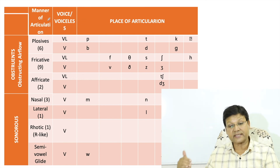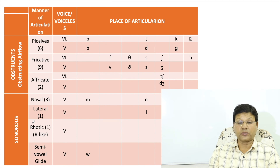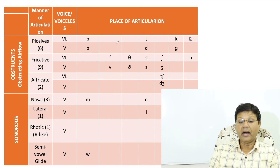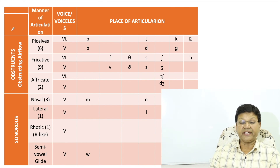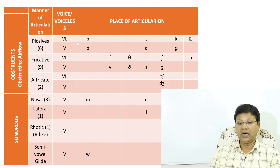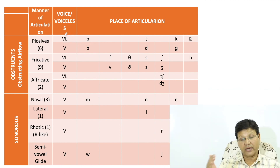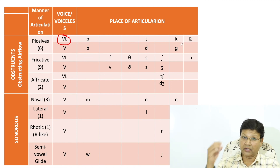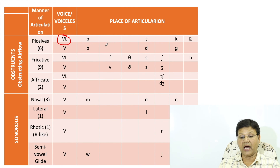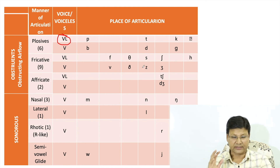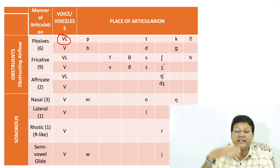In the chart: plosives — pa, ta, ka are voiceless; ba, da, ga are voiced. Fricatives — voiceless and voiced pairs. Affricate cha is voiceless, ja is voiced. All nasal sounds — ma, na, ng — are voiced. Lateral la is voiced. Similarly semivowels wa and ya are also voiced, since all vowels are voiced and semivowels follow the same pattern. This is the complete chart of manner of articulation.